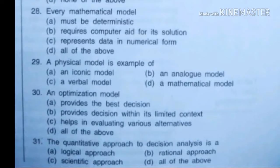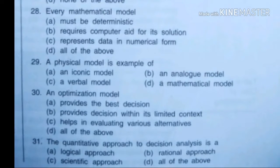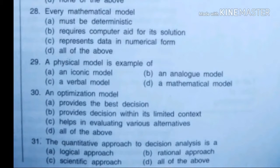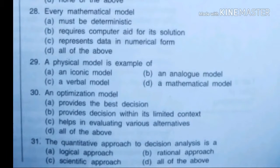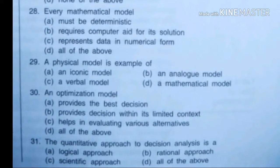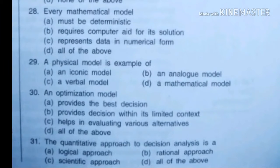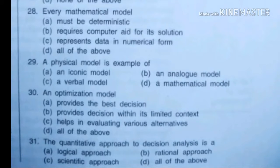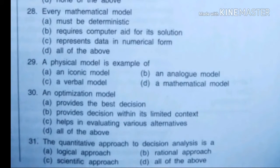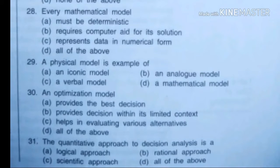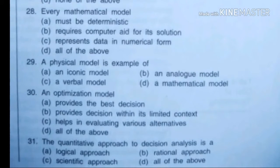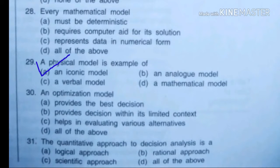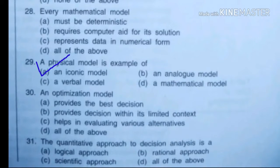A physical model is an example of: option A an iconic model, B is an analog model, C is a verbal model, D is a mathematical model. Right answer is A, an iconic model.